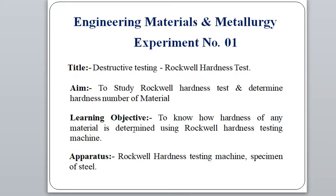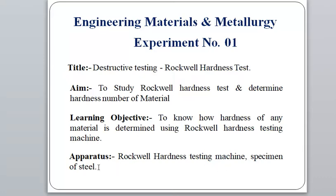The learning objective of the experiment is to learn how the hardness value of any material is determined using the Rockwell Hardness Testing Machine. The apparatus used includes the Rockwell Hardness Testing Machine and a specimen of steel — that is our workpiece or sample — which is made up of a ferrous steel material.